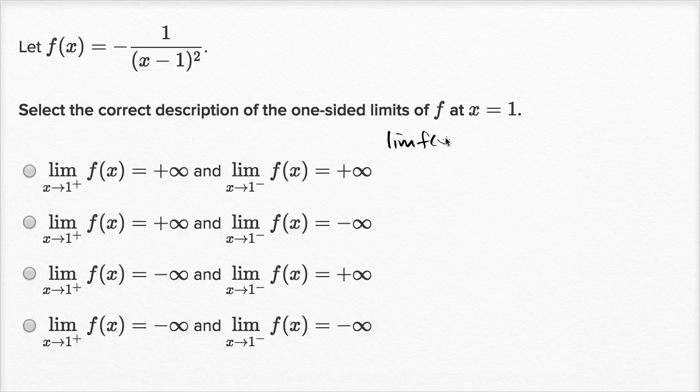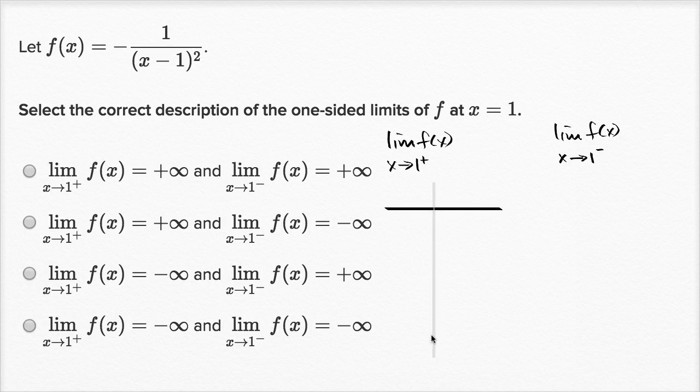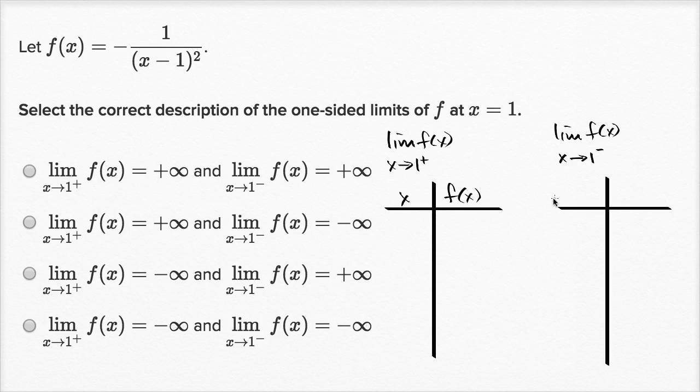So we could think about the limit of f of x as x approaches one from the positive direction and limit of f of x as x approaches one from the left-hand side. This is from the right-hand side, this is from the left-hand side. I'm just gonna make a table and try out some values as we approach one from the different sides. x, f of x. And I'll do the same thing over here.